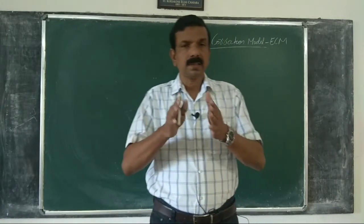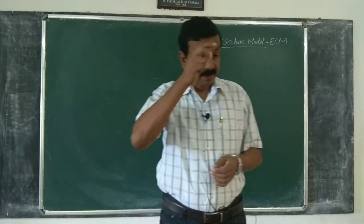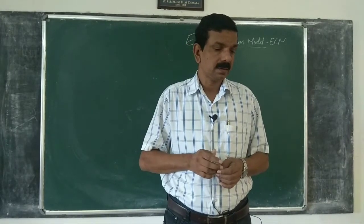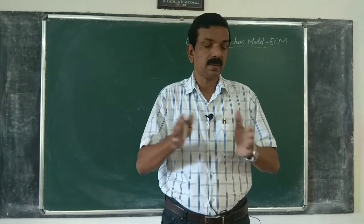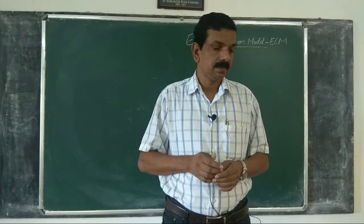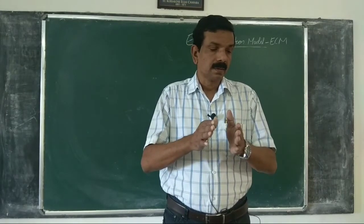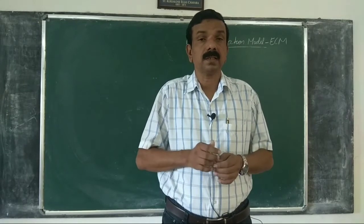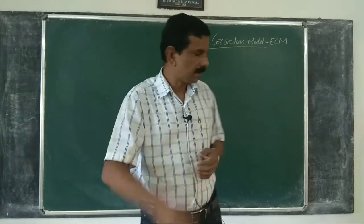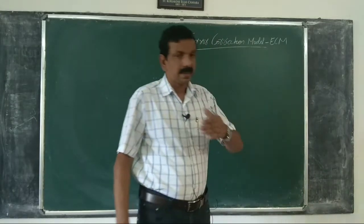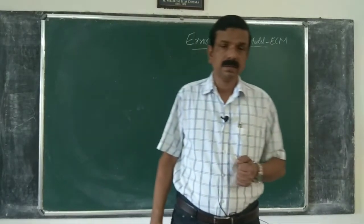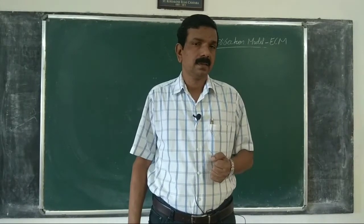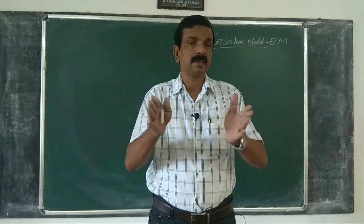We describe a dynamic relationship between I(0) variables which embeds a co-integrating relationship between variables, known as the error correction model. As we described in the last class, x_t and y_t are I(1), but in the ECM we take delta y and delta x so that they are I(0).